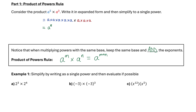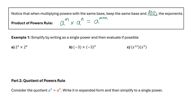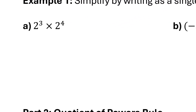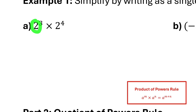Now let's do example one, where we practice applying that new rule. Example one says to simplify by writing as a single power and then evaluate if possible. Starting with part a: because I have two powers with the same base — both bases are two — and they're being multiplied, I can use the product of powers rule. I keep that same base of two and add the exponents 3 plus 4, which means this is equal to 2 to the power of 7, which is 128.